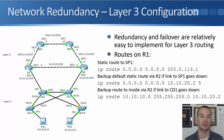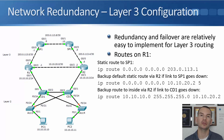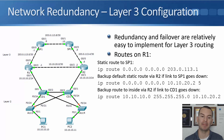Looking downstream from the R1 and R2 edge routers, we've got our core distribution layer switches and our access layer switches. We've got redundant links between them as well. They are layer 2 only devices, so we don't need to worry about configuring IP addresses or configuring routing there.